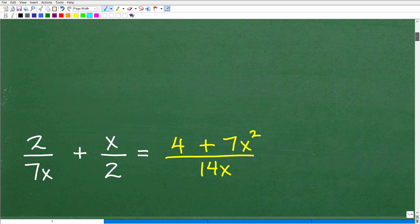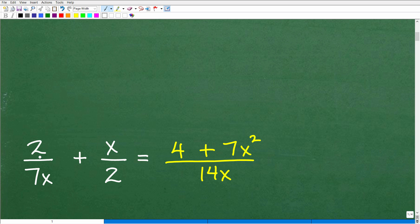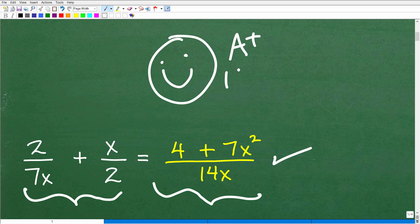Okay. So here is the solution. So two over seven X plus X over two, the sum of these two fractions or rational expressions is the following: four plus seven X squared over 14 X. So this is the correct answer.